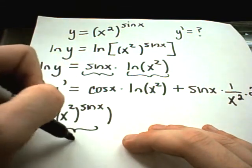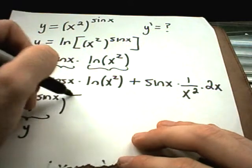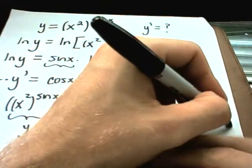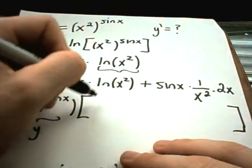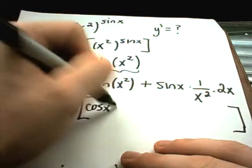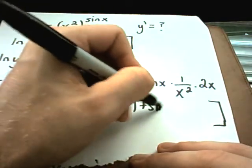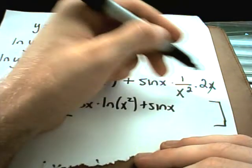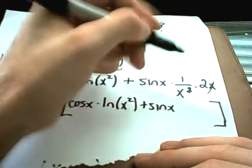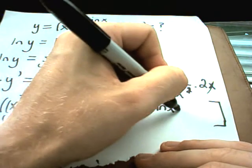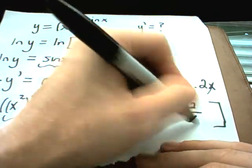So this is my y term that I'm multiplying on both sides. And then basically just drop down what you found on the right side. So you have cosine of x times ln of x squared plus sine of x, and I could cancel out an x over here with an x down here. So I can make this times 2 over x.